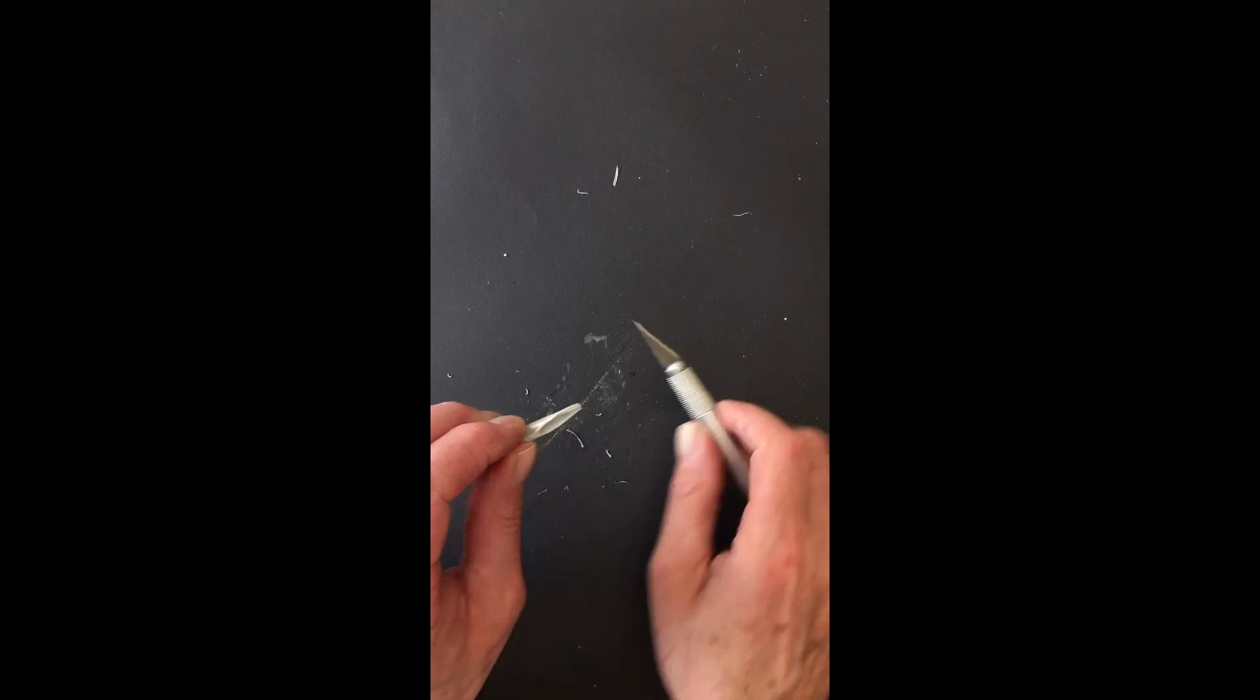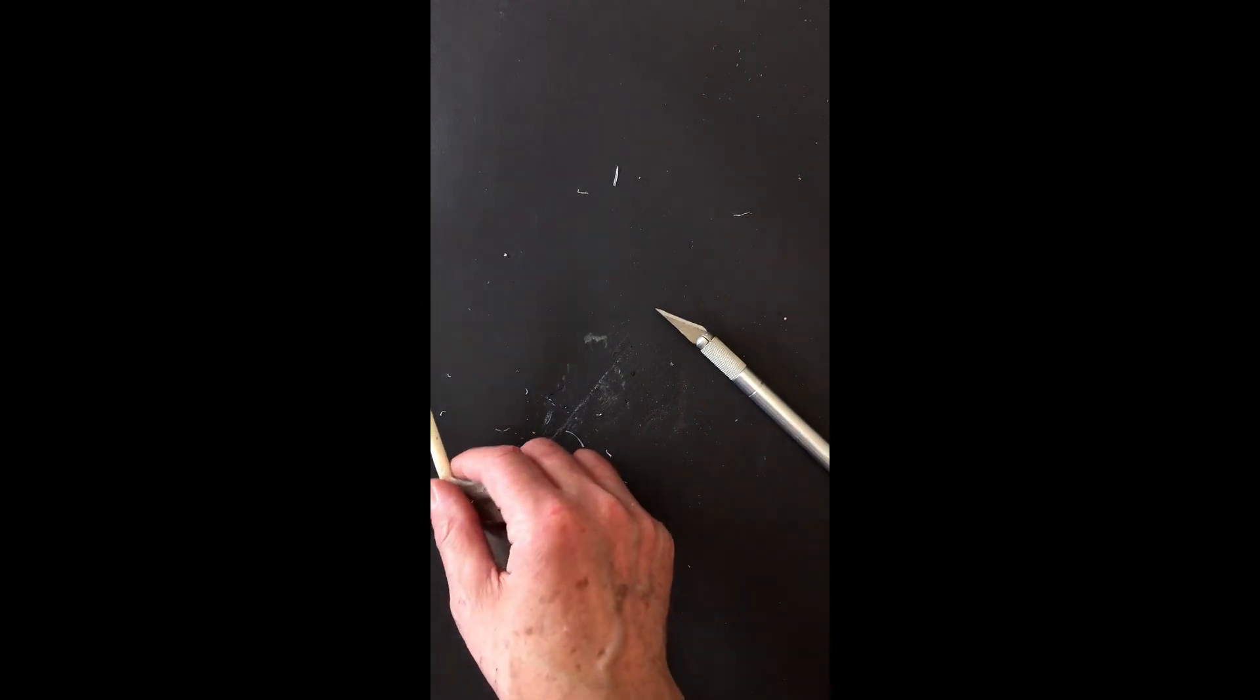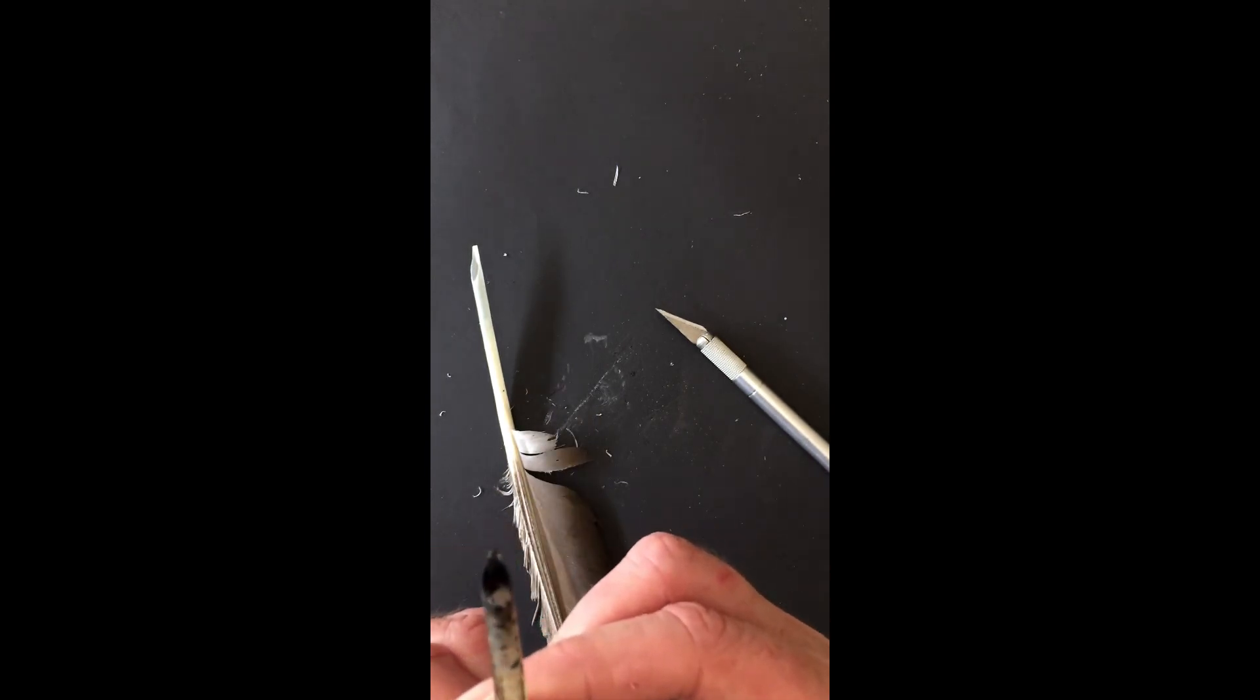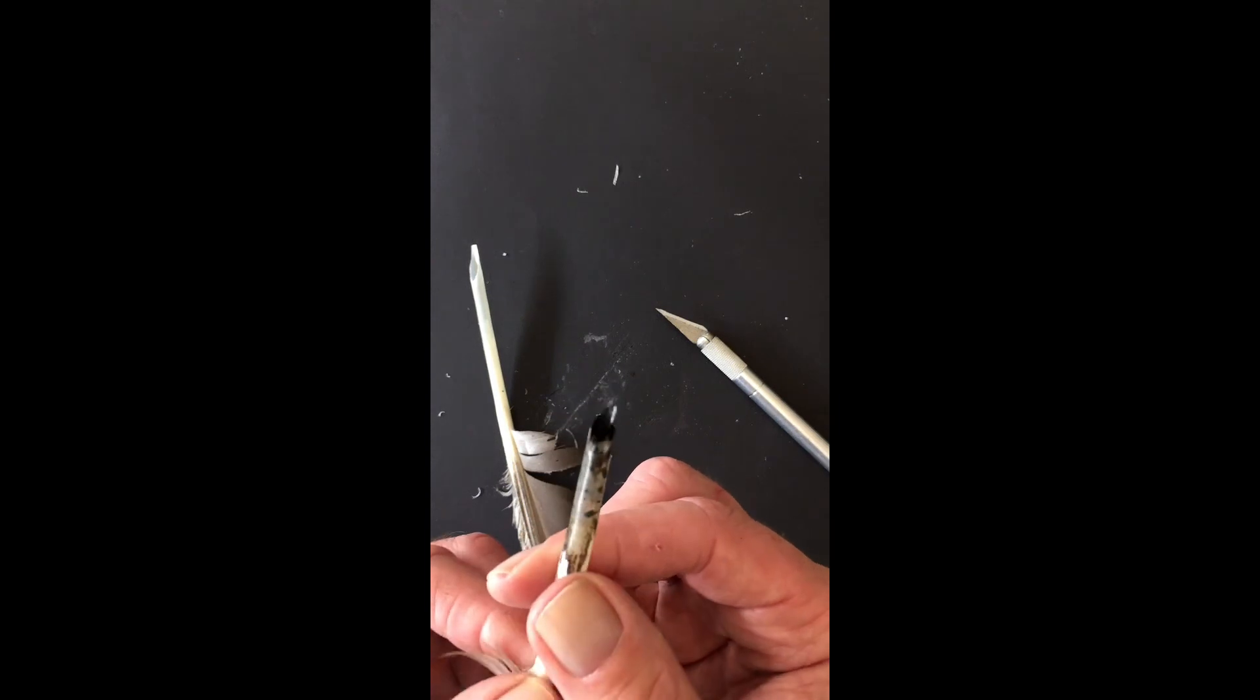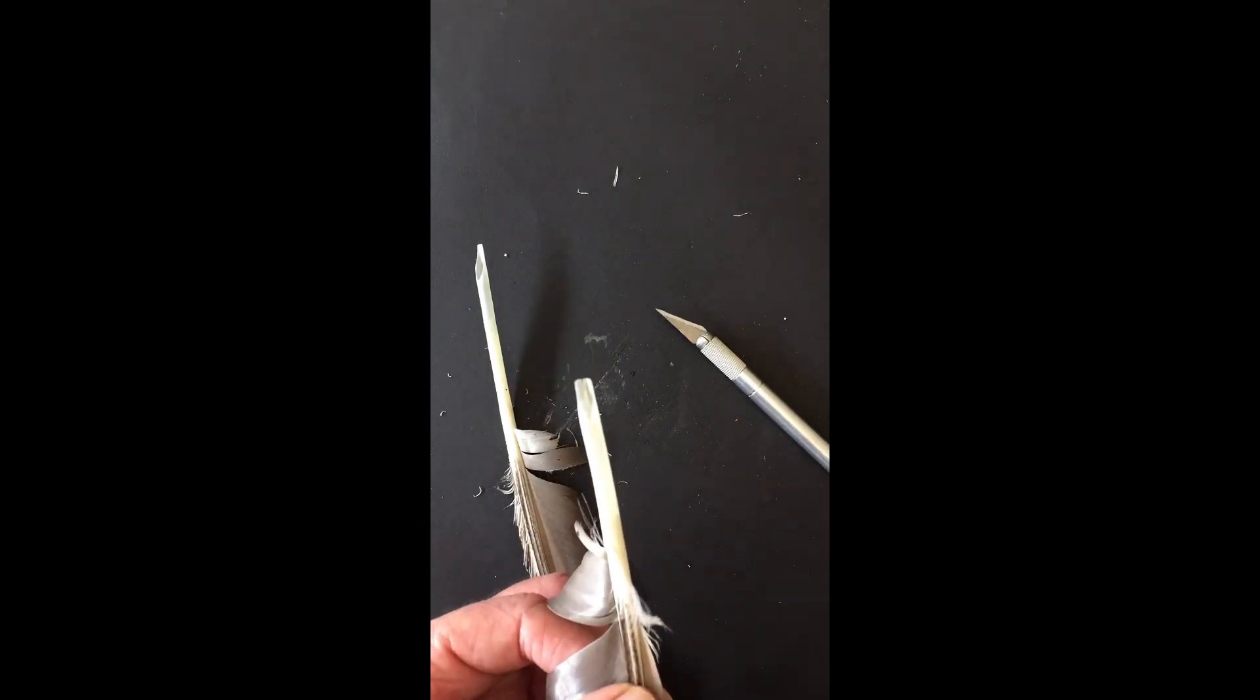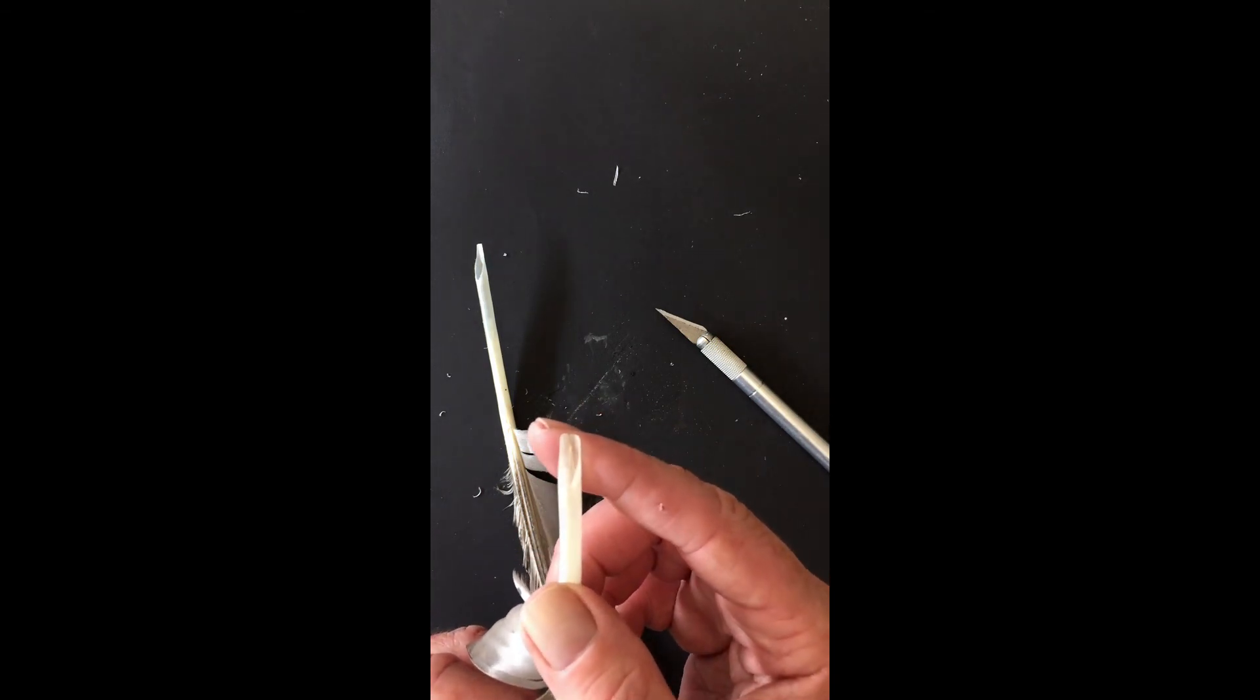That's better, a little bit more square. So that's the kind of average size nib. Now what I've got here is a little bit more of a point. You can see this one's been used. It's got a slightly finer point, which is ideal for doing some fine lines, lettering, and so on. Another one here that I made earlier is that I left it quite wide, as you can see. So that's going to be useful for doing broad strokes.